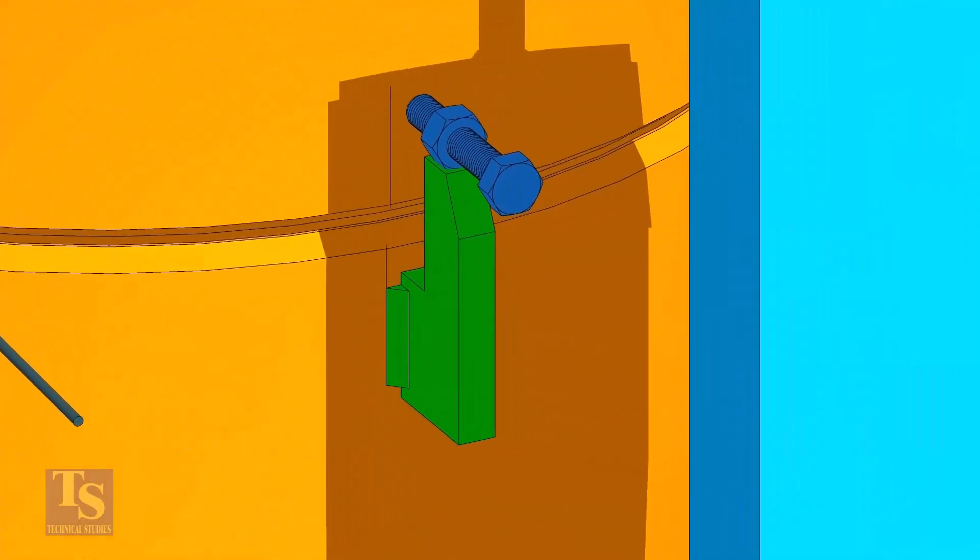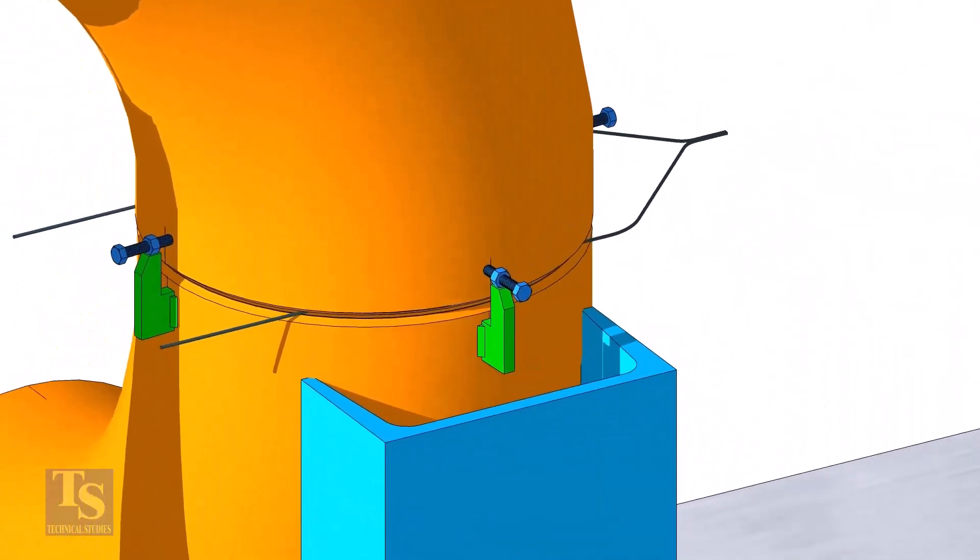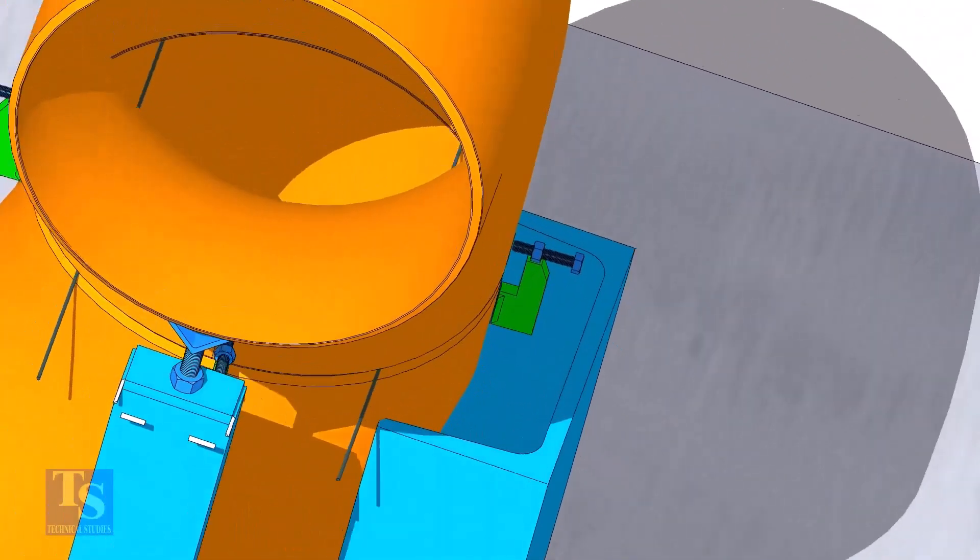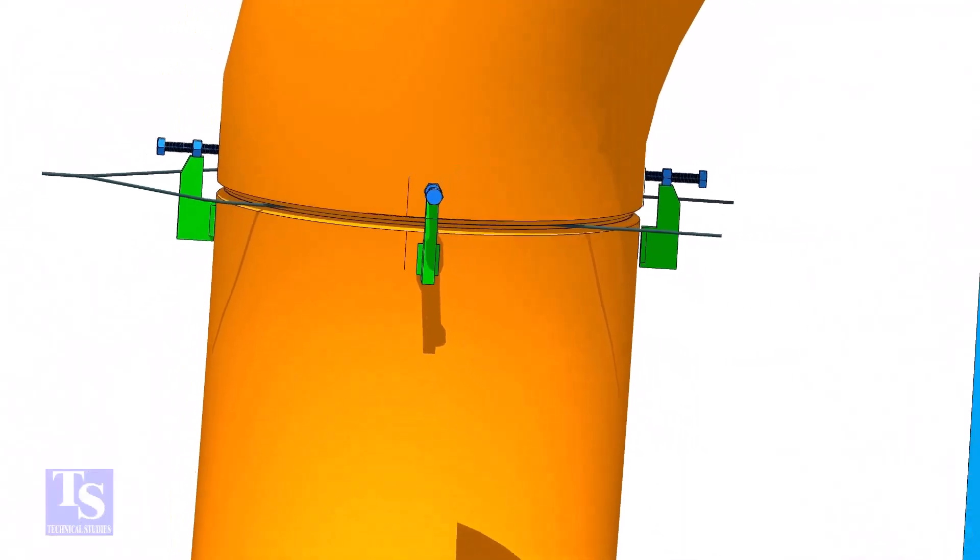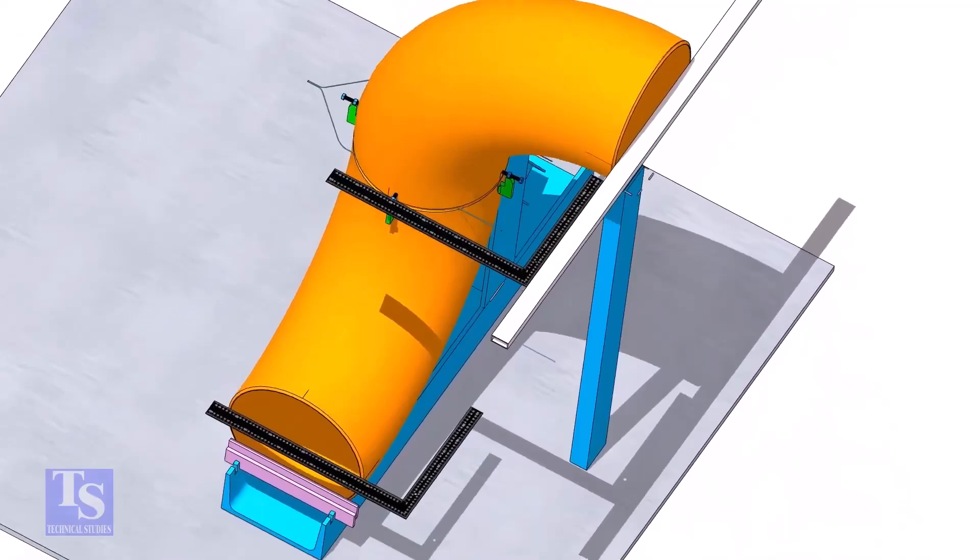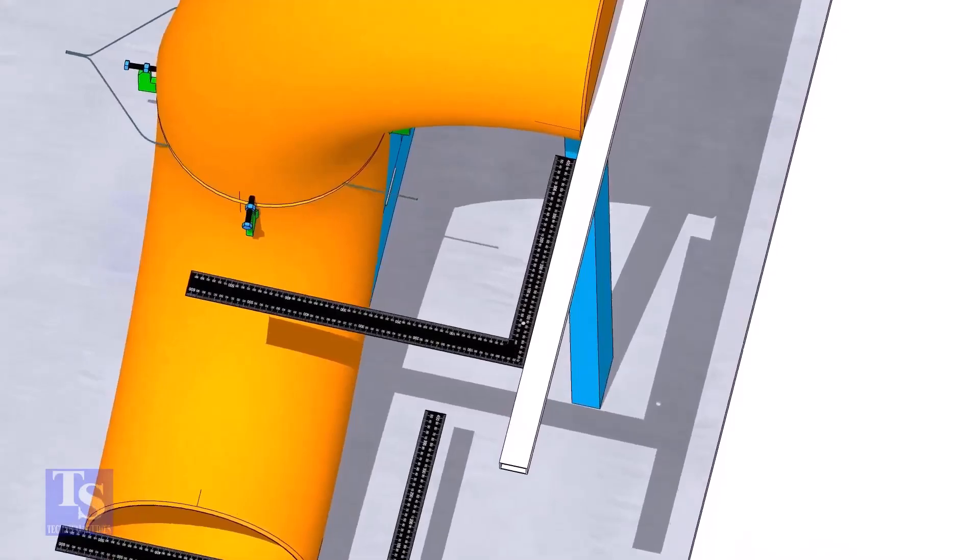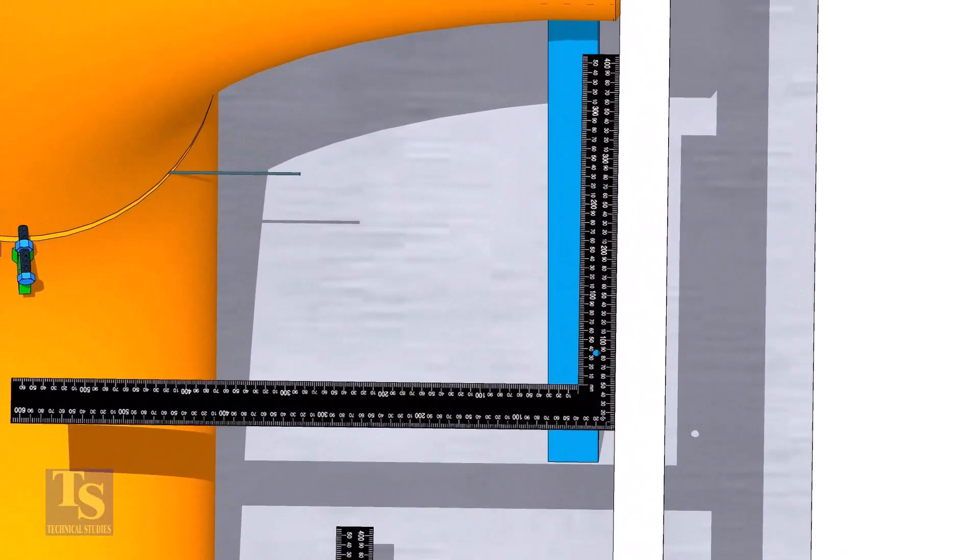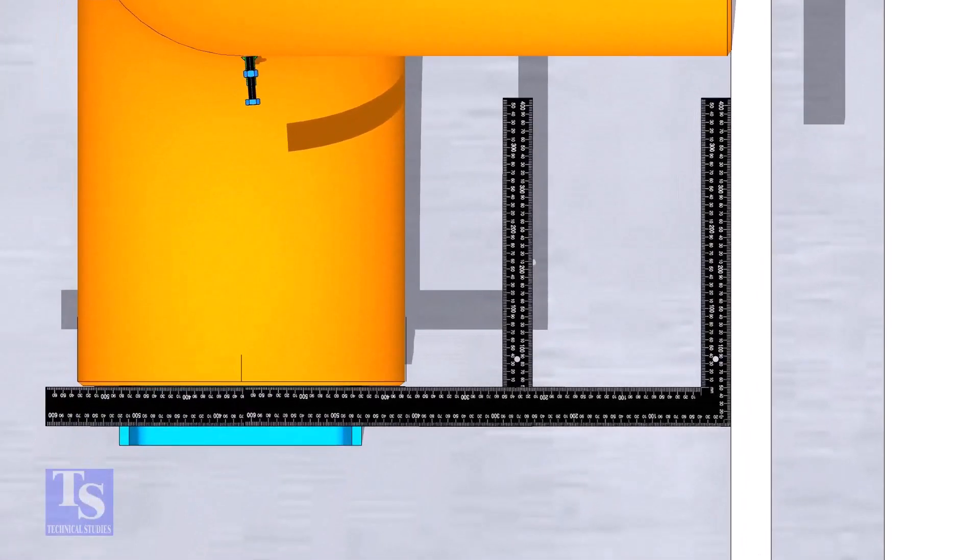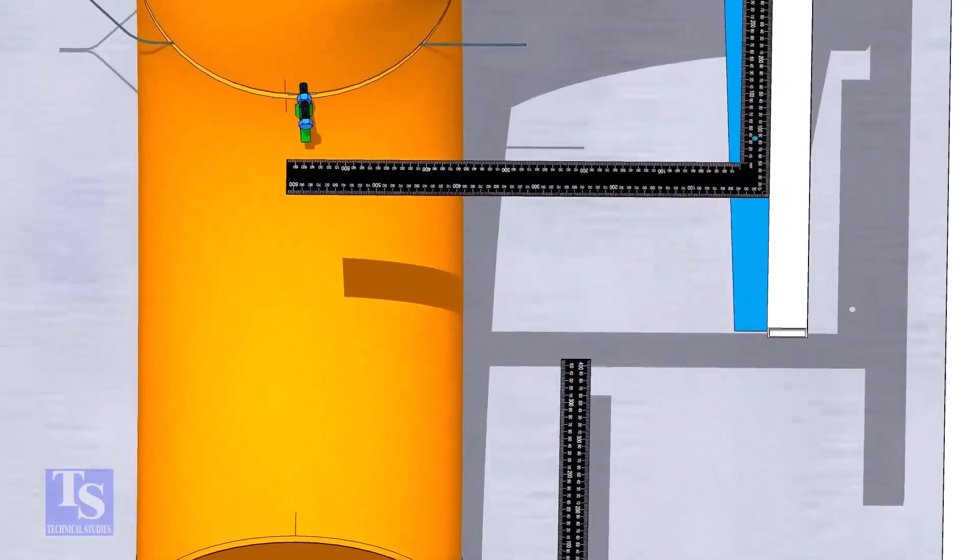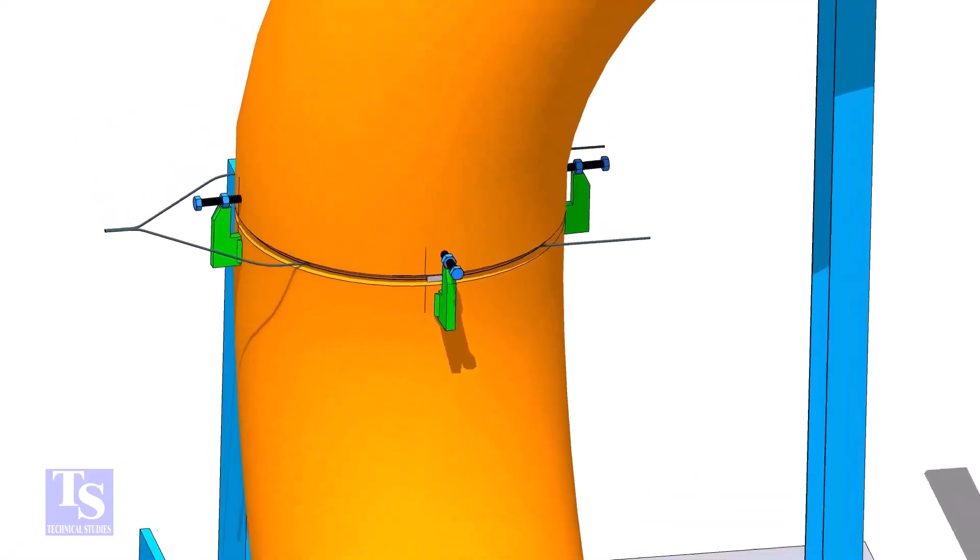Check if the gap is correct. Final check the squareness of the elbows. Tack weld on the near and the far sides of the joint as shown.